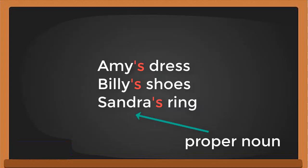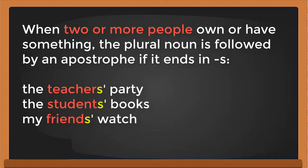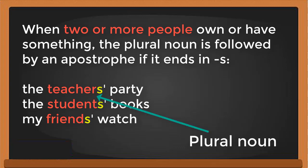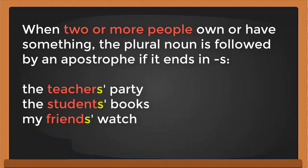When two or more people own or have something, the plural noun is followed by just an apostrophe if it already ends in -s. For example, 'the teachers' party' — teachers is a plural noun ending in -s, so you don't need to add another -s after the apostrophe.